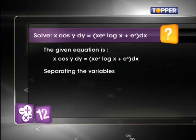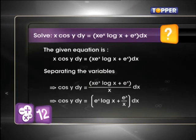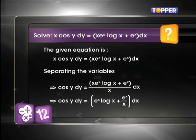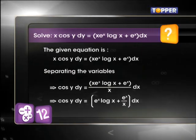So, on separating the variables x and y, we get the equation cos y dy = (xe^x log x)/x + (e^x)/x dx.